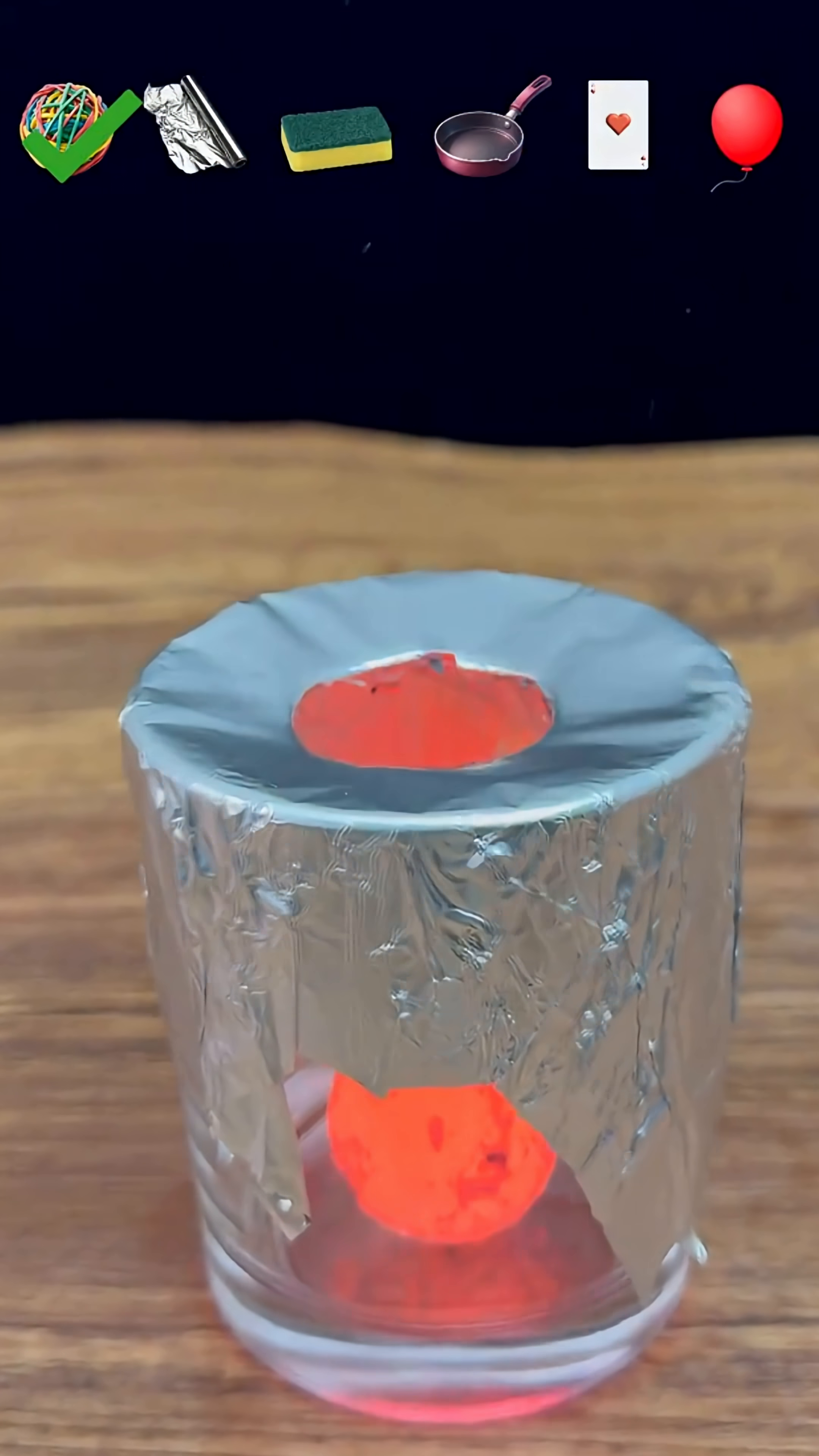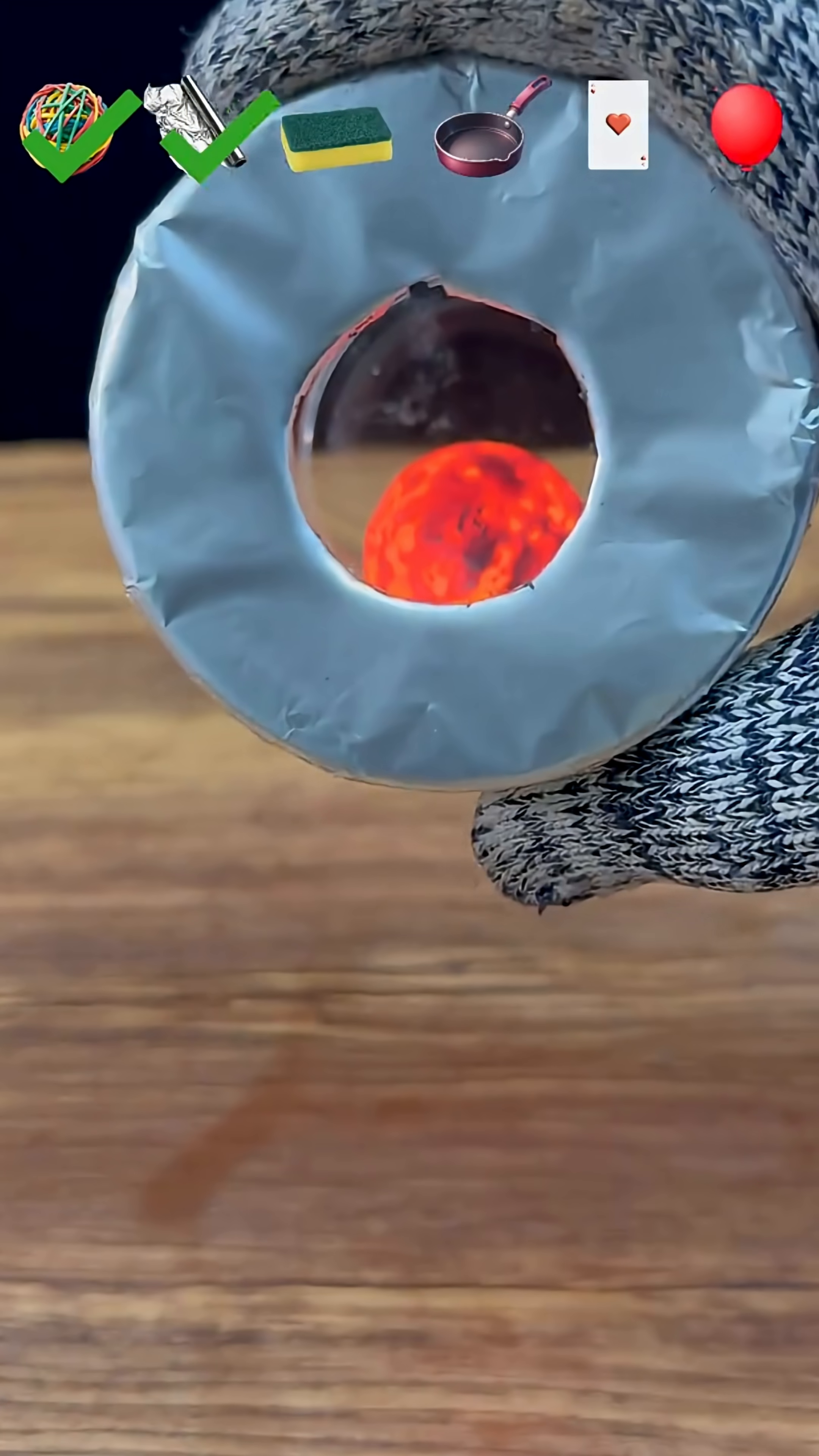Next, we place a sheet of aluminum foil over the cup. Let's see how this common metal handles the extreme temperature.